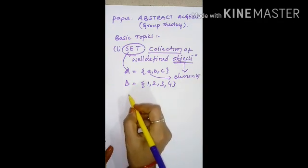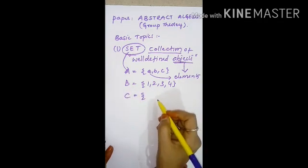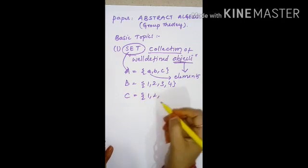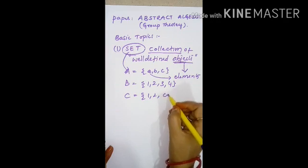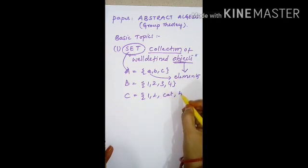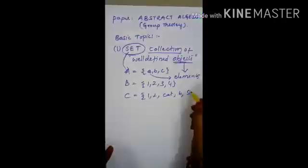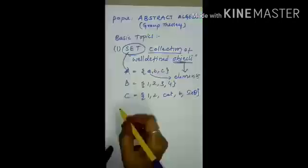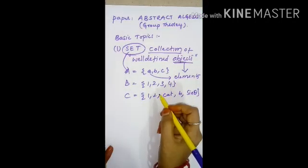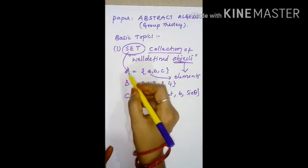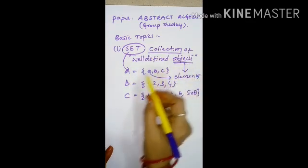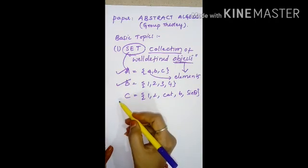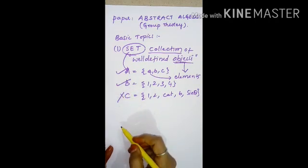Suppose you consider another set: 1, 2, cat, B, sin theta. This is not a set. What is a set? Collection of well-defined objects. C is not a set.